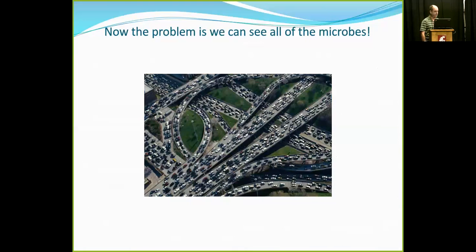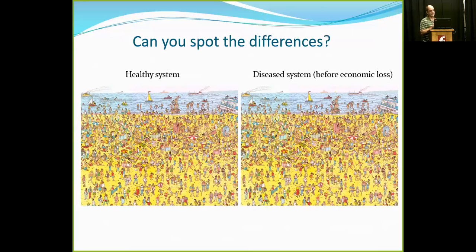Now the problem is we can see all the microbes — and that is the problem, because we can see everything. It's almost like the terrorist problem: who's the terrorist when everybody looks the same? There's so much data it's overwhelming. We don't really want to see a plant in a diseased state — we want to see the disease state right before it becomes an economic loss, before the damage happens. We're looking at a healthy system versus a disease system, trying to find the needle in the haystack — once this one organism does something, the cascade starts and the whole disease process moves forward.